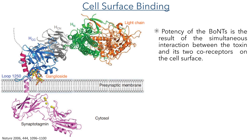The extremely high potency of these toxins is due to their unusual binding mode, which is mediated by the simultaneous binding to two different core receptors on the cell surface. One of these is the protein synaptotagmin, which has a transmembrane loop. The other receptor is a ganglioside, which is a glycolipid embedded in the cell membrane.